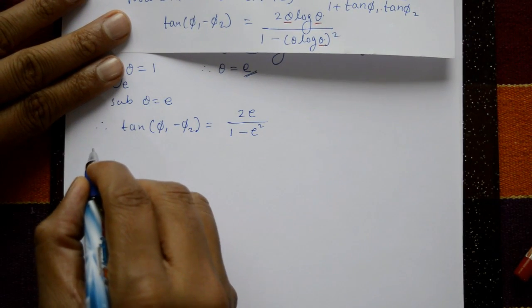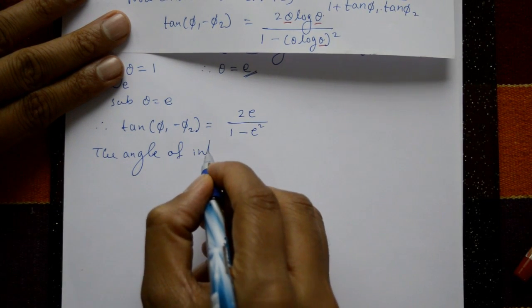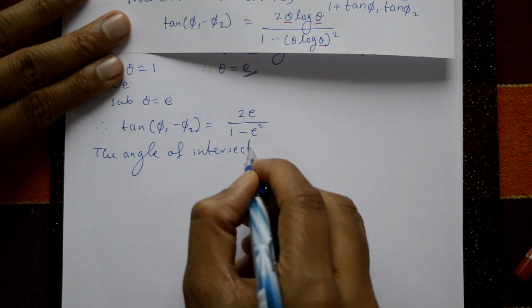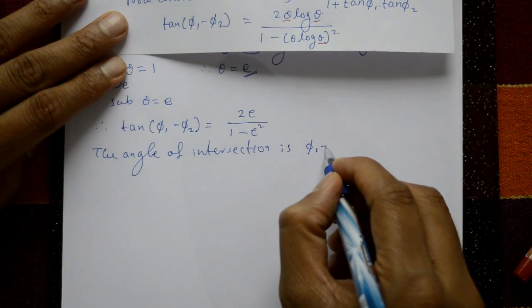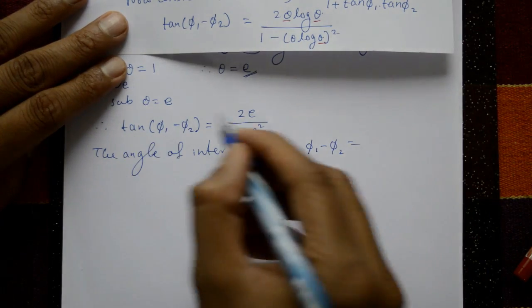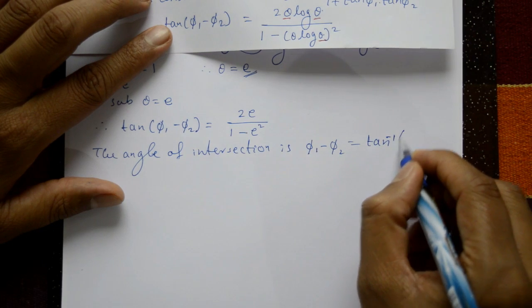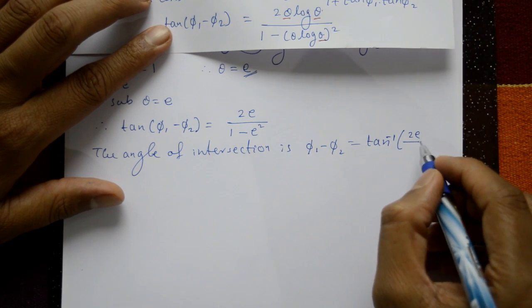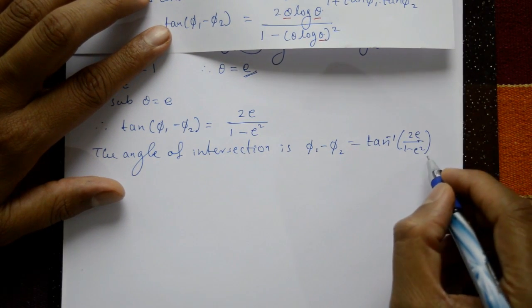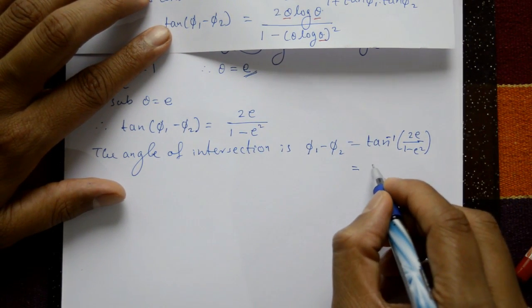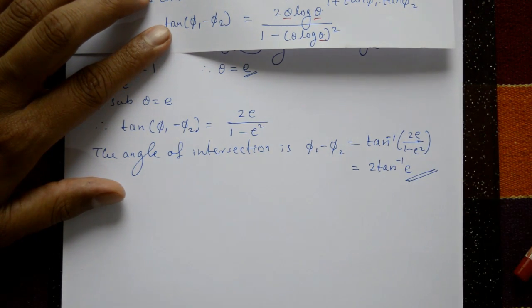Therefore the angle of intersection φ₁ − φ₂ = tan⁻¹(2e/(1 − e²)), which equals 2tan⁻¹(e). This is the required answer.